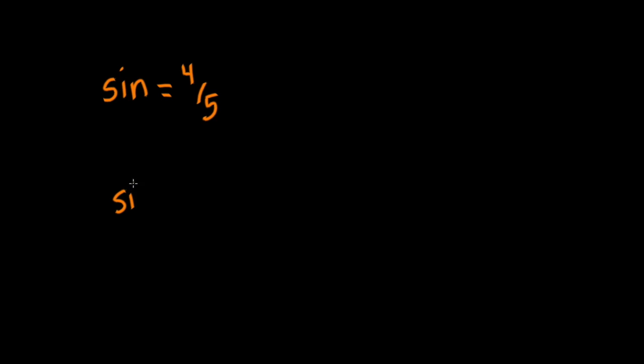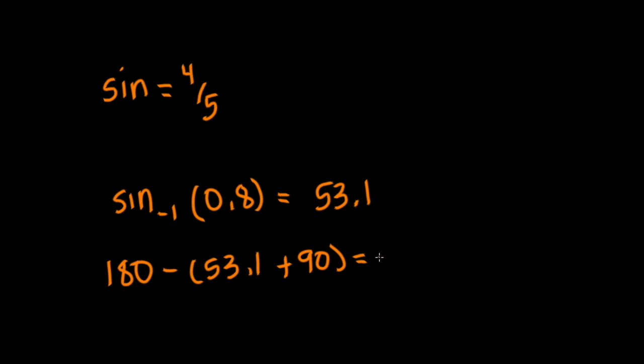So if we press sine to the negative 1 and type in 0.8, we are going to find a number, which I will round to 53.1. This is the measurement of our angle. Because we know that the other angle is 90 degrees, we can add the two angles together. So 180 minus 53.1 plus 90 is going to equal 36.9.